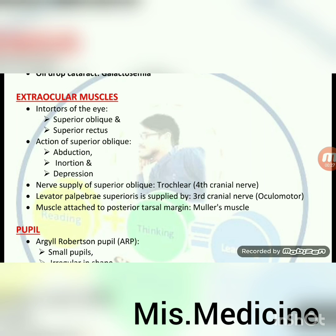Extraocular muscles: intorters of the eye are superior oblique and superior rectus. Action of superior oblique: abduction, intorsion and depression. Nerve supply of superior oblique: trochlear, fourth cranial nerve. Levator palpebrae superioris is supplied by the third cranial nerve (oculomotor nerve). Muscle attached to posterior tarsal margin: Müller's muscle.